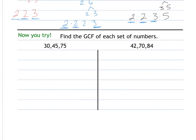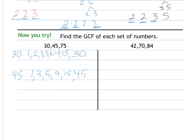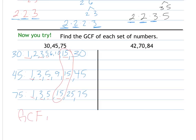Try these using any method you'd like. For 30, 45, and 75 by listing: factors of 30 are 1, 2, 3, 5, 6, 10, 15, 30. Factors of 45 are 1, 3, 5, 9, 15, 45. Factors of 75 are 1, 3, 5, 15, 25, 75. Common factors are 1, 3, 5, and 15. The greatest of those is 15, so the greatest common factor is 15.